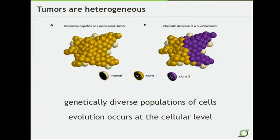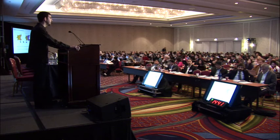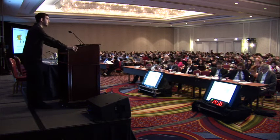My first statement here will be that tumors are heterogeneous. This was suspected as far back as the 70s, but it's really taken the advent of high-throughput sequencing before we were able to dive deep into these tumors and see that they are, in fact, genetically diverse populations of cells, and that because of that, within these, evolution is occurring at the cellular level.